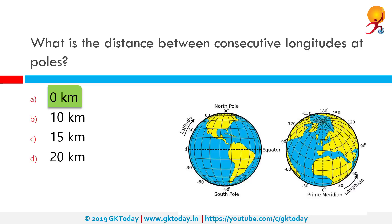What is the distance between consecutive longitudes at the poles? The correct answer is zero kilometers. A degree of longitude is widest at the equator with a distance of 111 kilometers. The distance gradually shrinks to zero as they meet at the poles. At 40 degrees north or south, the distance between degrees of longitude is 85 kilometers.